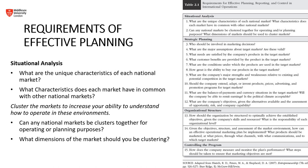Cluster the markets to increase your ability to understand how to operate in these environments. Ask yourself: can any national markets be clustered together for operating or planning purposes? Can Peru, Japan, Uruguay, and Kenya all fit together? Lastly, what dimensions of the market should you be clustering? As we see in Table 2.1, the requirements of effective planning, reporting, and control in international operations are divided into four primary sections: situational analysis, strategic planning, organizational structure, and controlling the program.